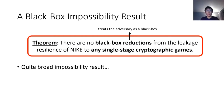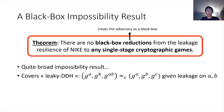This is a quite broad impossibility result. In particular, it covers the leaky version of the Diffie-Hellman key exchange. This shows that we won't be able to prove the leakage resilience of the Diffie-Hellman key exchange based on standard assumptions, at least with respect to black-box reductions.